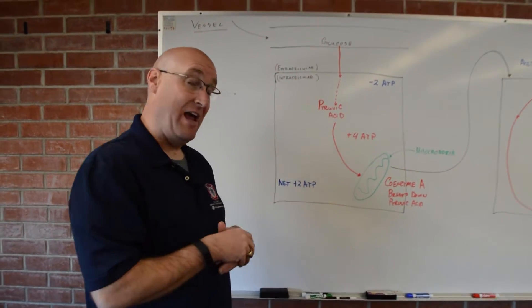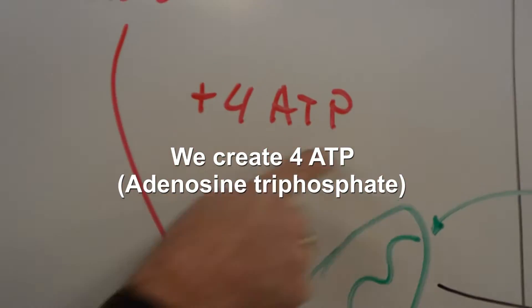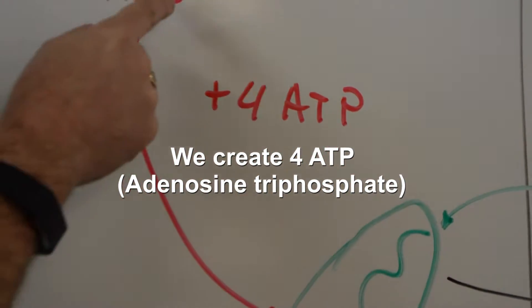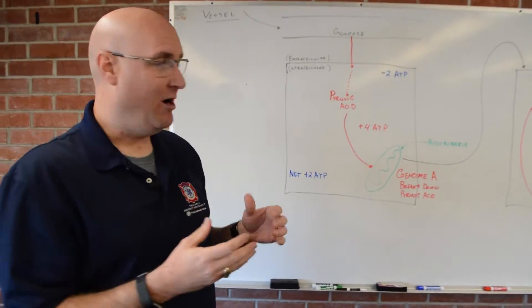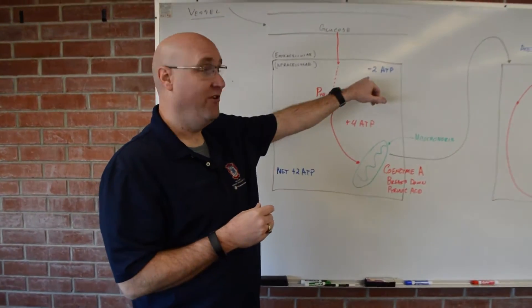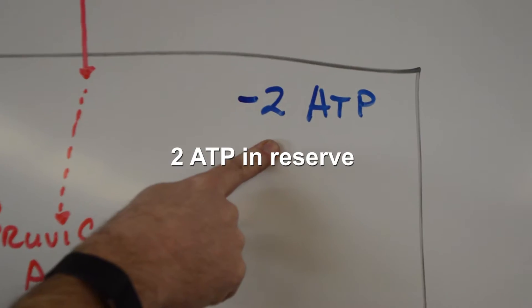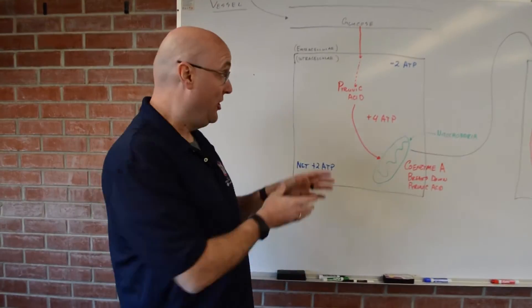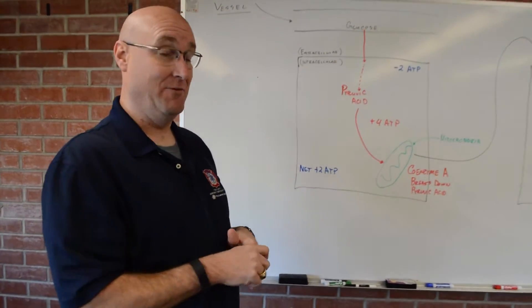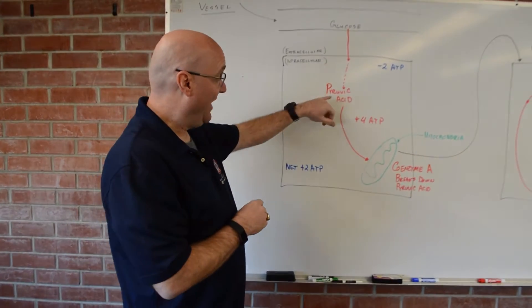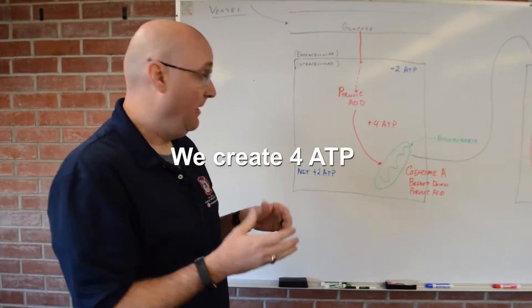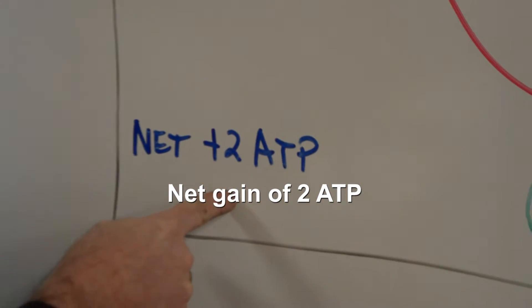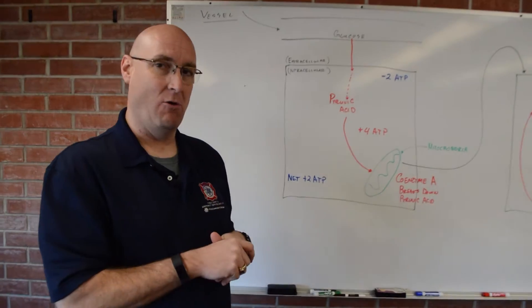So it gets broken down. And when that pyruvic acid gets broken down, we create four ATP. But in order for that to occur, we need energy. All this occurs in the cell as an active process. So we need energy. So the cell always has two molecules of ATP in its reserve to start the process of breaking down pyruvic acid. So pyruvic acid is broken down, and we create four ATP, so we get a net gain of about two ATP within our cell.